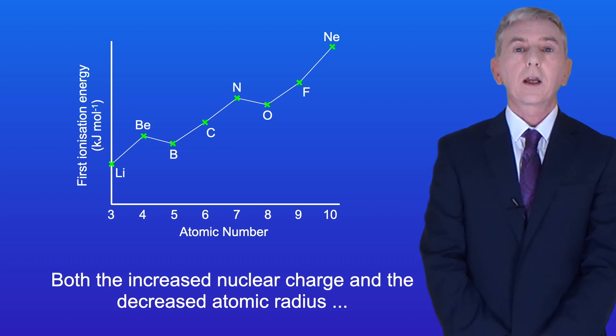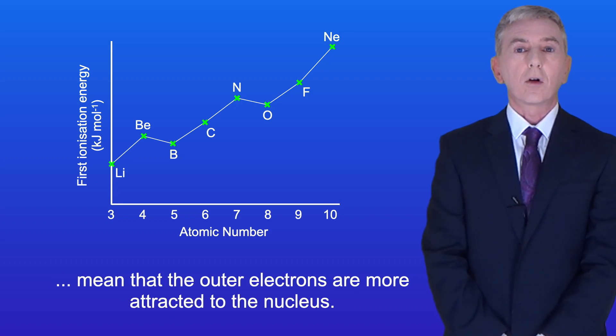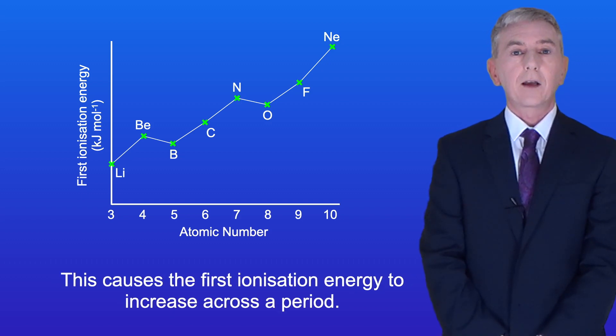Both the increased nuclear charge and the decreased atomic radius mean that the outer electrons are more attracted to the nucleus and this causes the first ionization energy to increase across a period.